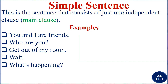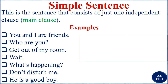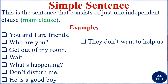'What's happening?' — you're asking someone what's happening — it is one independent clause, so it is a simple sentence. 'Don't disturb me' is one independent clause, so it is a simple sentence. 'He is a good boy' is a simple sentence with one independent clause. 'What a lovely dress you have' is one independent clause, so we say it is a simple sentence.